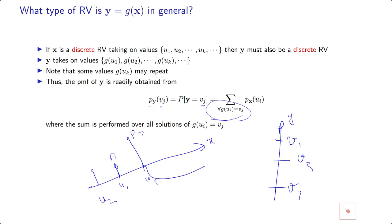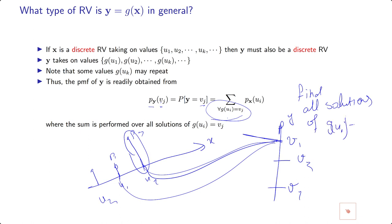Sometimes, if this is mapped here, these probability masses will be transferred here. If two points are mapped here, these two probabilities shall be added. This means find all solutions of G(Ui) equal to Vj. You find all the Ui which satisfy this and then put their masses together to find the mass at point Vj.